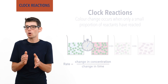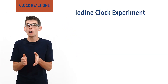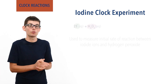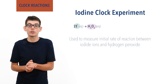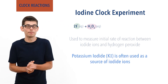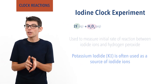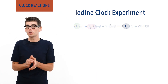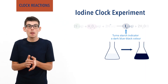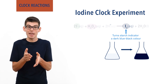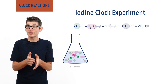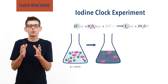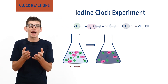A common example of a clock reaction at this level is the iodine clock experiment, or Harcourt-Eson experiment. It's used to measure the initial rate of reaction between iodide ions and hydrogen peroxide. Potassium iodide is often used as a source of iodide ions, as it dissolves in water, releasing them. Iodide ions and hydrogen peroxide react together to form iodine molecules, I₂, and water. Iodine molecules turn starch indicator a dark blue-black colour, meaning if the reaction is carried out with starch indicator in the reaction mixture, as soon as the reactants react and iodine is formed, the colour of the mixture changes from colourless to dark blue-black.